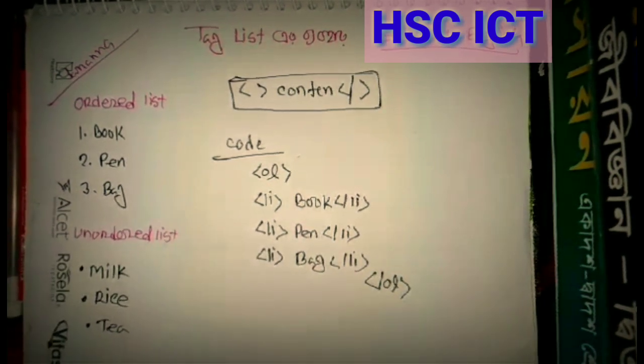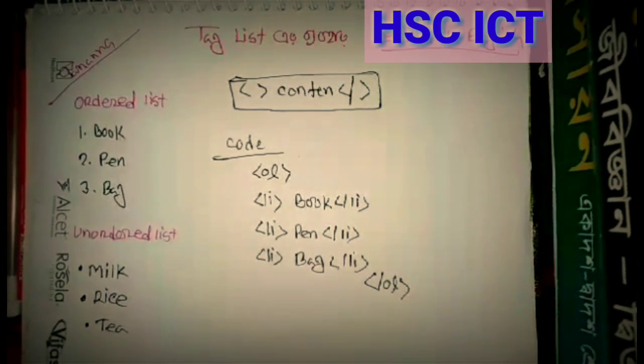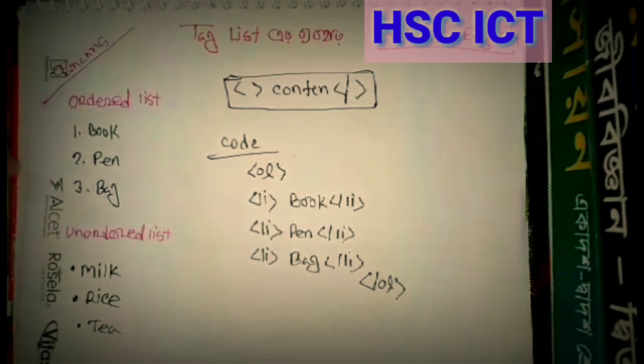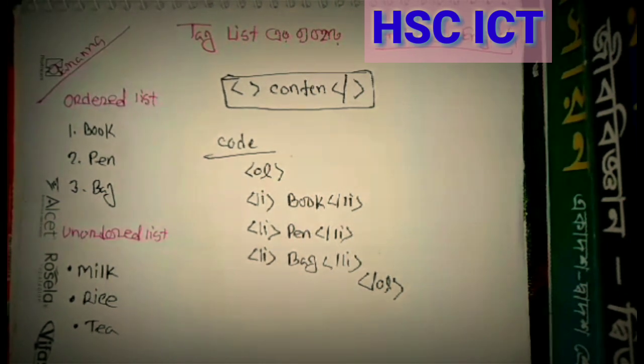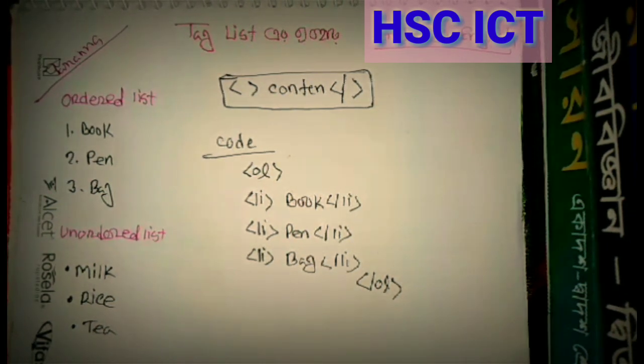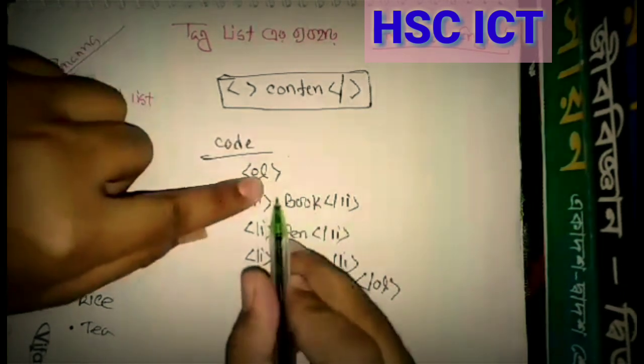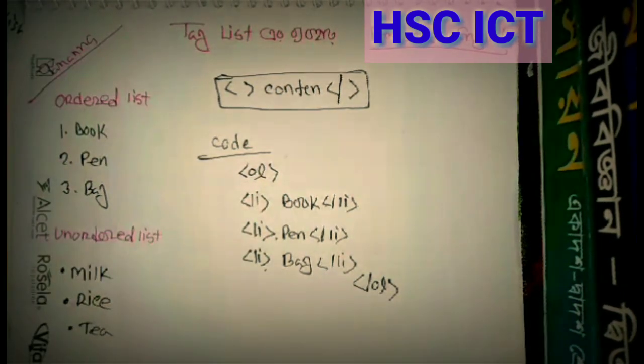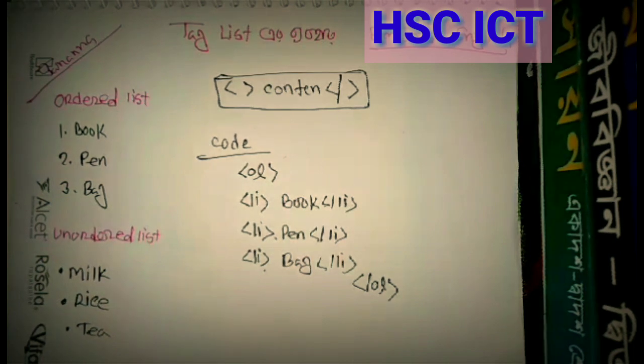If we have a browser, we can see this list: 1. book, 2. pen, 3. bag. Now we can see the same list. This list is automatically numbered.